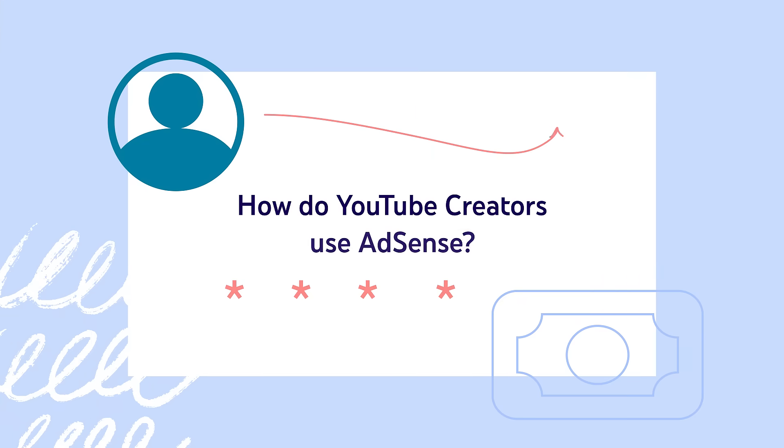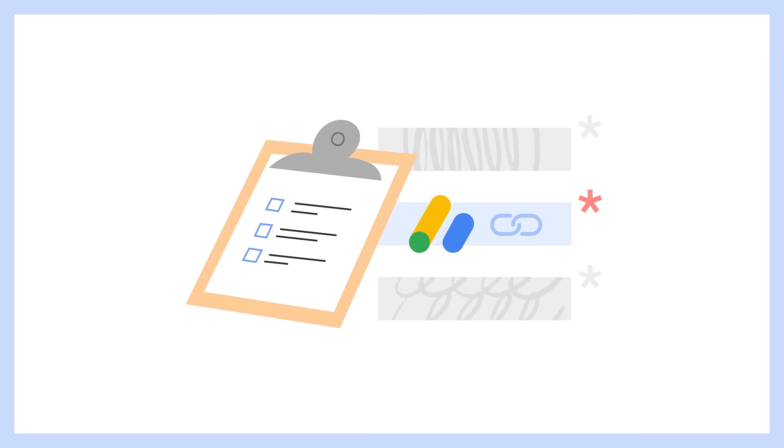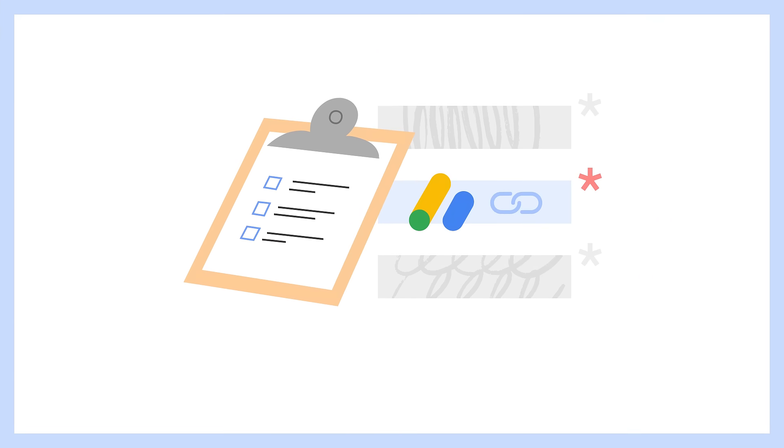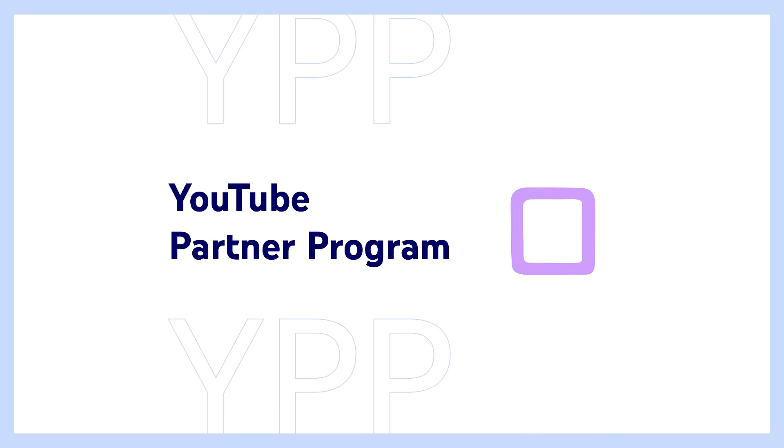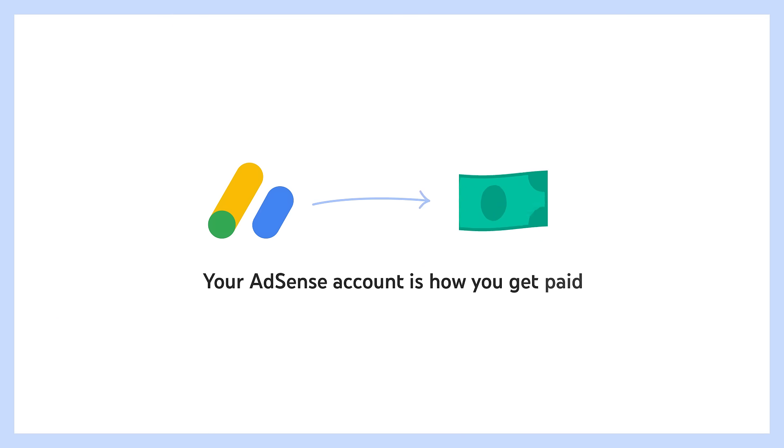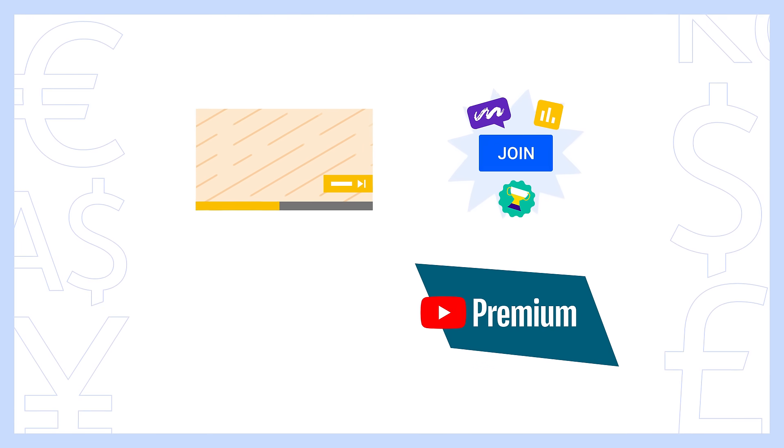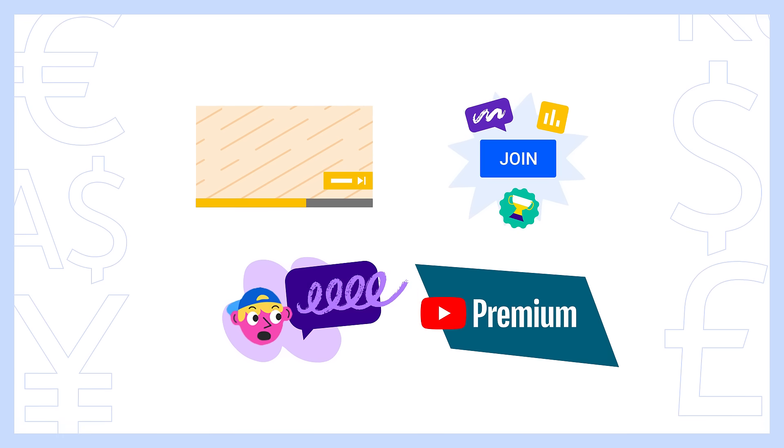First, how do YouTube creators use AdSense? Creating and linking an AdSense account is one of the requirements to be accepted into the YouTube Partner Program. Once you're in the program, your AdSense account is how you get paid. AdSense is another Google product separate from YouTube that allows people or companies to run ads on their websites and receive payment. But when it comes to being a YouTube creator, it's mainly used as a payment tool, and you need an account to ensure you get paid for the money you earn, whether that's from ads being played on your videos, YouTube Premium, memberships, Super Chat and Super Stickers, and more.